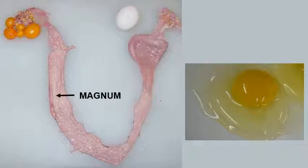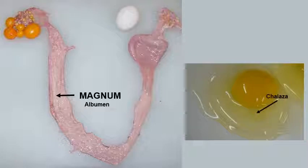The next part of the oviduct is the magnum. The yolk remains here for about three hours. This is where the albumin is added to the egg. As the yolk passes down the magnum, it rotates, and strings of albumin are twisted tightly to form the chalazae that hold the yolk in the middle of the finished egg.